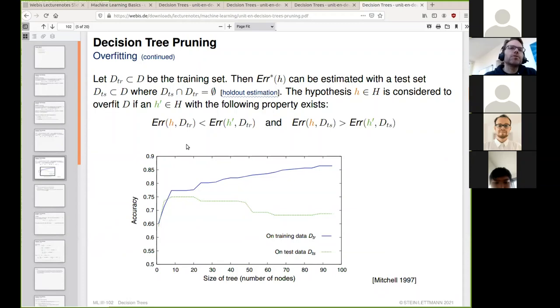Here is an example from the Mitchell book where overfitting takes place for decision tree construction. On the x-axis, we see the size of the decision tree as more nodes are added. On the y-axis, we see the accuracy. For the training data in blue, the curve shows improvement, whereas the performance on test data shows a different characteristic with a decrease in performance.